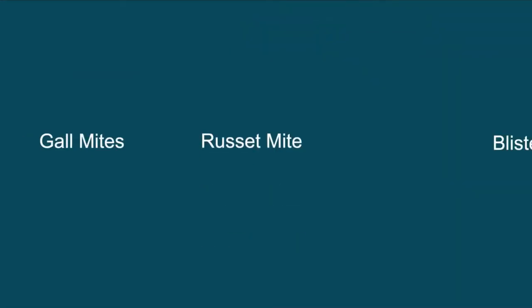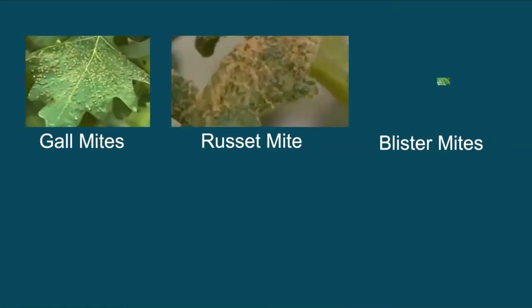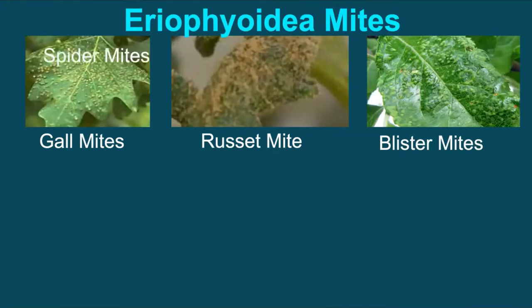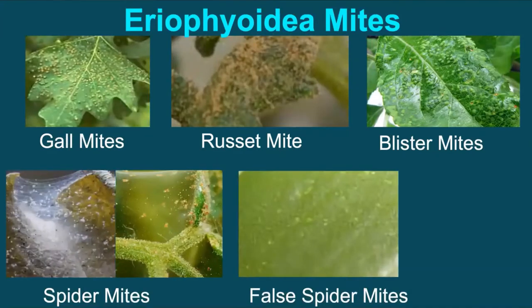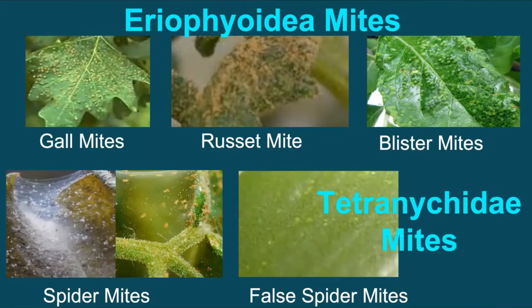Worldwide there are more than 6,000 species of plant-feeding mites. Out of two broad categories, mites like gall mites, bud mites, rust mites, witch's broom mites, and blister mites belong to Eriophytia, and spider mites, false spider mites or flat mites, citrus flat mites, ornamental flat mites, red and black mites, pineapple flat mites etc. belong to Tetranychidae. Both categories are major agricultural pests, and it is important to note they have many differences.